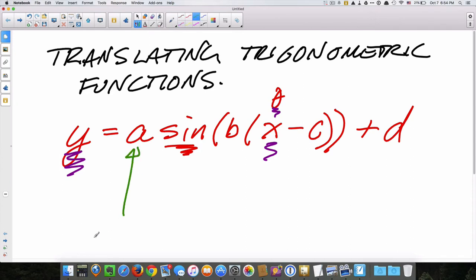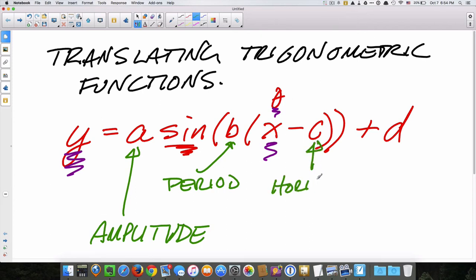This value has to do with the amplitude, which we learned about in the previous video. This one has to do with the period. And these two will have to do with translation. This is a horizontal - it will affect the horizontal. And this one will affect the vertical location of our trigonometric function. Hopefully we'll do this more quickly and not take too long.